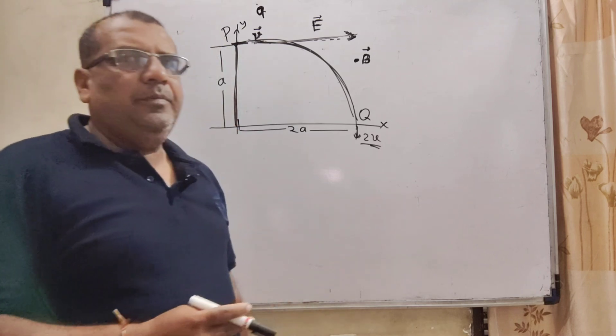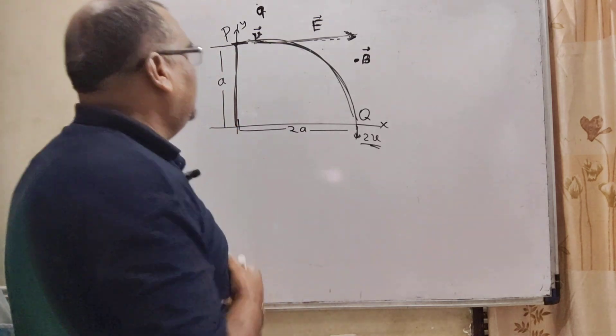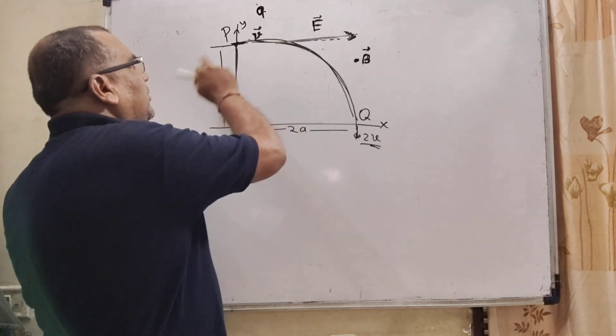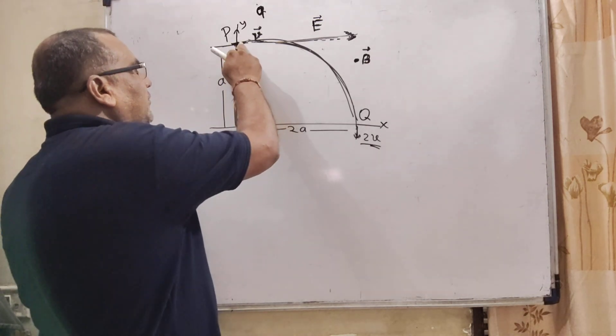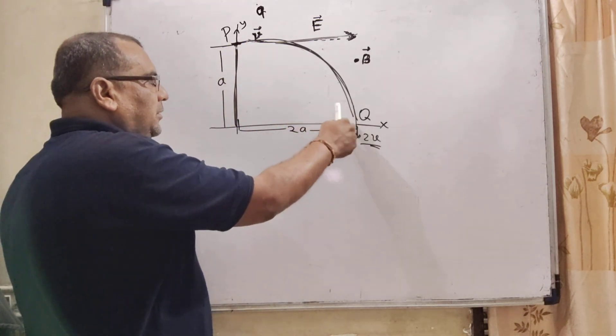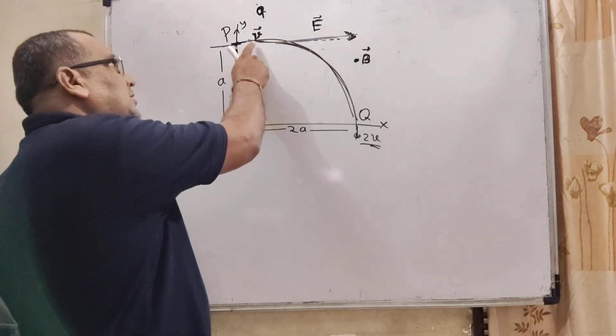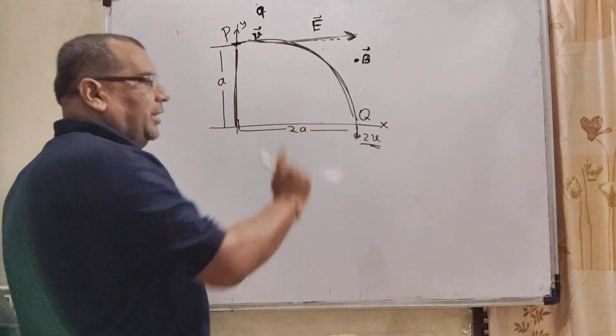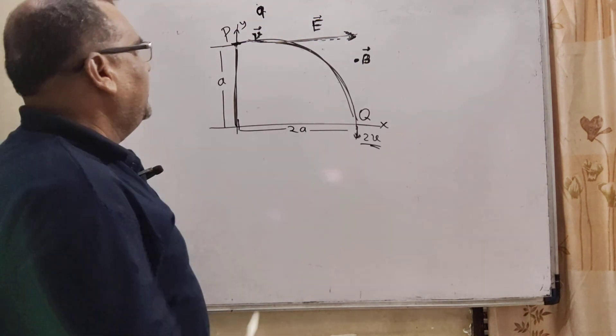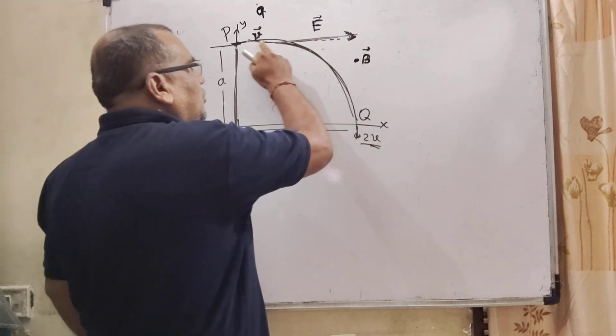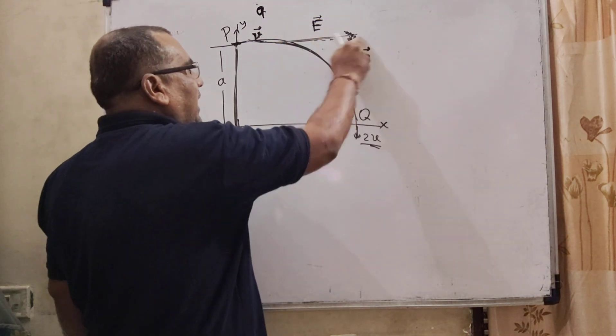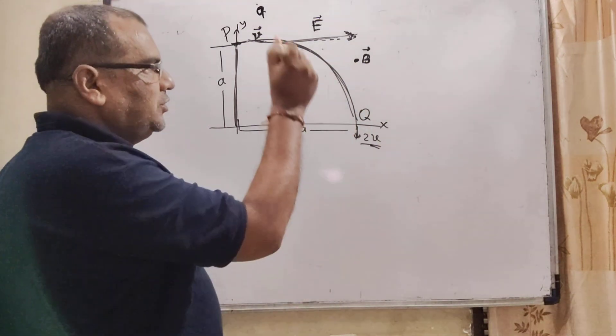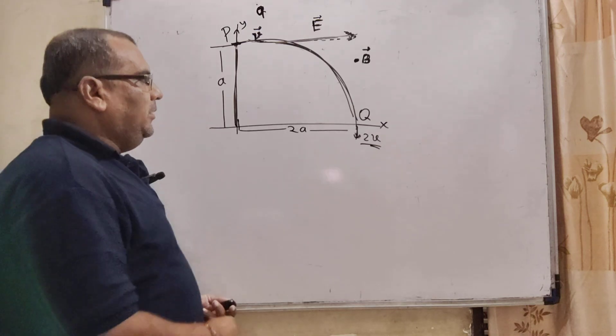Let's see what the question says. Here, a charge is moving from the Y axis and reaches to the X axis. And so velocity becomes V to 2V and the displacement is A and 2A. Here, this electric field is towards the X axis, and the dot shows the magnetic field upwards to the board.